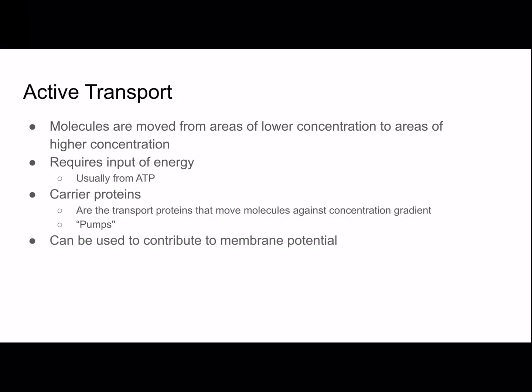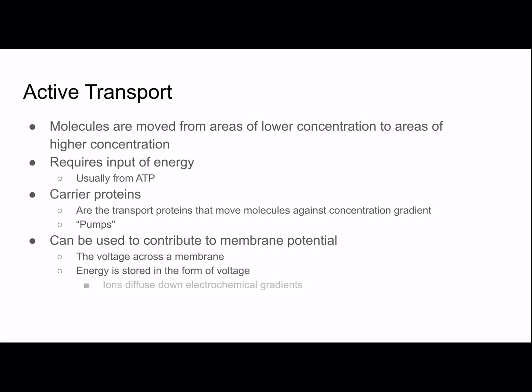Active transport can contribute to membrane potential, which is the voltage across a membrane, and energy is stored in the form of voltage. Ions diffuse down electrochemical gradients — ions have an electrical force in addition to a concentration gradient that affects their diffusion. The combination of concentration gradient and electrical force determines how ions move, so a positive ion would tend to diffuse toward areas with negative ions.